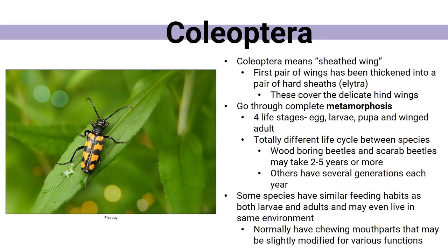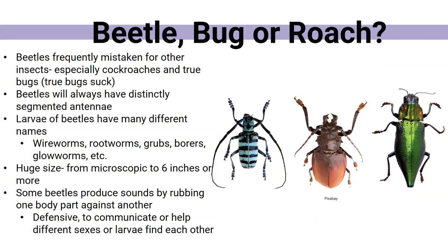Some beetles, when grouped together, have similar feeding habits. Sometimes the larva and the adults have completely different types of feeding and what they eat; sometimes they're the same. Sometimes they live in completely different environments. Normally they do have chewing mouthparts, which we'll talk about today — they've just been altered to fit the type of food they're eating.